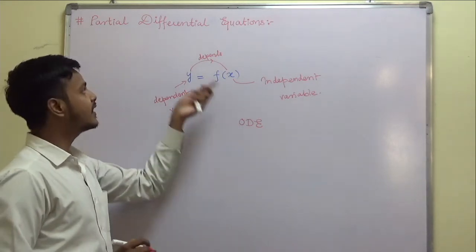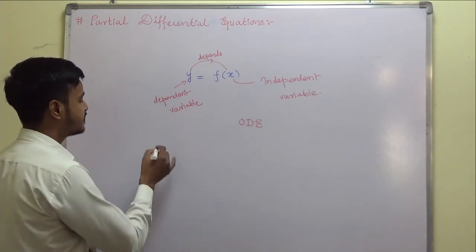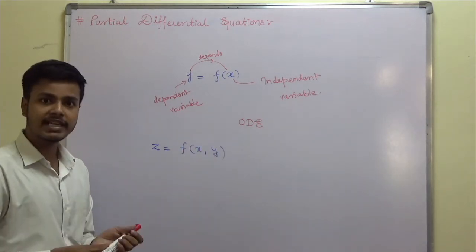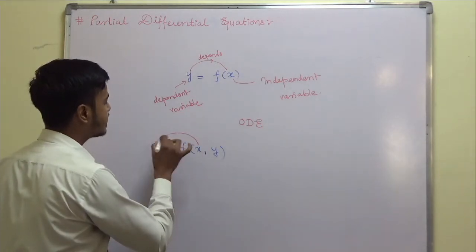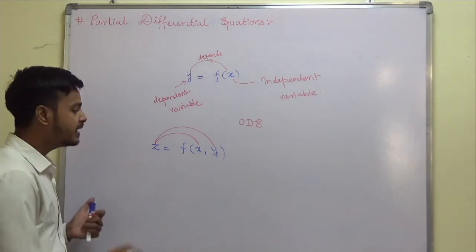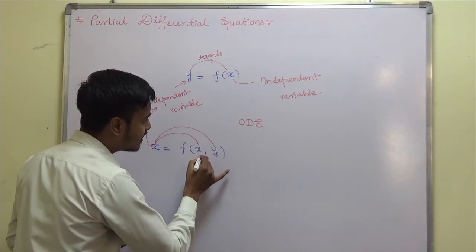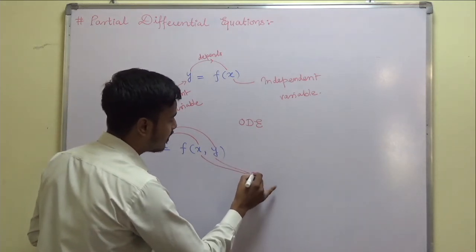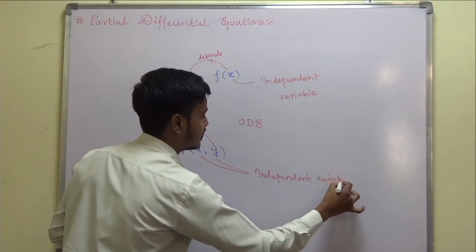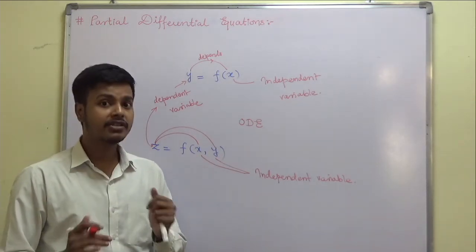But that is not the topic we are going to learn. We are going to learn partial differential equations. If we have a function z equal to f of x, y, then z depends on both x and y. Here z is the dependent variable, and x and y are independent variables. When there are more than one independent variable, partial derivatives are involved.